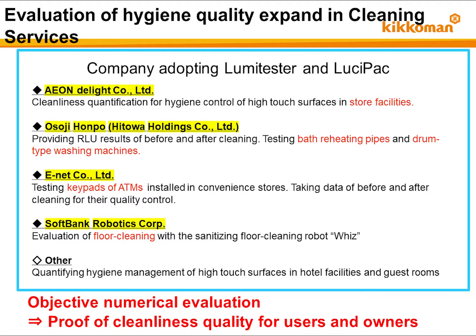Here are some examples of companies in the cleaning industry that use the LumaTester and Lusipac: AionDelight, which cleans store facilities; Osoji Honpo, well known for house cleaning; E-Net, which installs and maintains convenience store ATMs; and SoftBank Robotics, which sells sanitizing cleaning robots. The LumaTester and Lusipac are also used in hotels and other facilities. A current case study shows that companies applying the LumaTester for cleaning service have shifted from vague evaluation criteria to quantified criteria, resulting in higher cleaning quality. Managing day-to-day cleaning work with objective numerical values serves as proof of cleaning quality for users and owners.